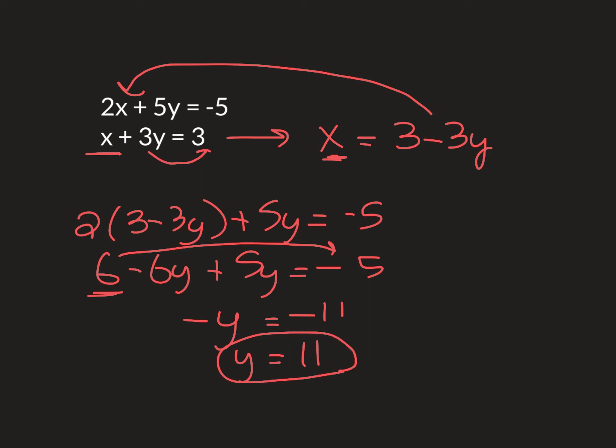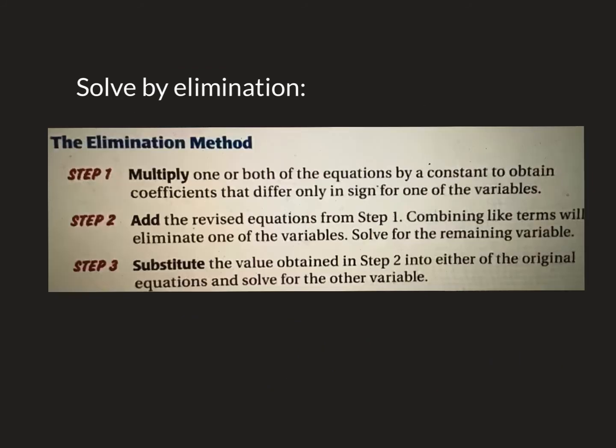Once you get your y, the great thing about substitution is I'm going to plug it right back there where the x got, to find x. And x equals 3 minus 3y, so I'm just going to plug my 11 right there for that y. And I would get 3 minus 3 times 11, which would be 3 minus 33, which is negative 30. That's my x. So my answer is negative 30 and 11. And that's all there is to substitution.